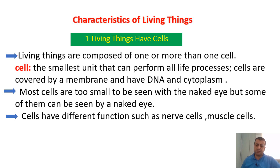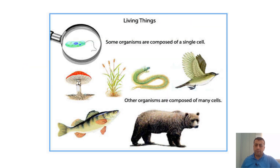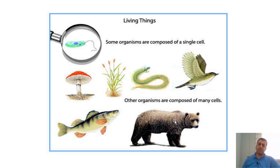Cells have different functions, such as nerve cells, muscle cells, or heart cells — they each have a different job. For example, fungi are made of cells, plants are made of cells, worms are made of cells, birds are made of cells, fish are made of cells, and bears are made of cells. That means all living things are made of cells.